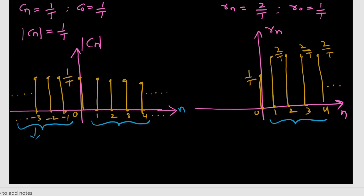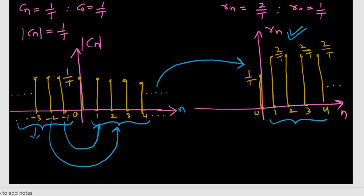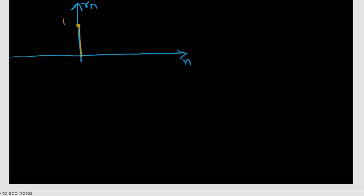So ultimately we need Rn — we need only positive frequency components. What can we observe going from Cn to Rn? The component at minus 1 is added to the component at plus 1; the component at minus 2 is added to plus 2; the component at minus 3 is added to plus 3, and so on. By adding like this we get Rn. The component at 0 remains the same, and Rn becomes 1/T at n=0, and 2/T, 2/T, 2/T... for n = 1, 2, 3 and so on.